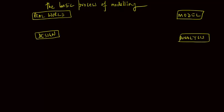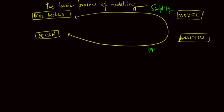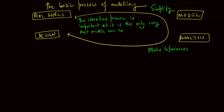We go to and fro between the real world and the final design. In getting to the model, we need to simplify the real world. The objective of the analysis is to allow us to make inferences. The iterative process is important as it is the only way that models can be improved and validated.